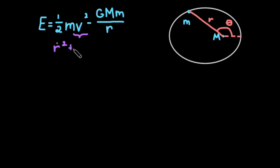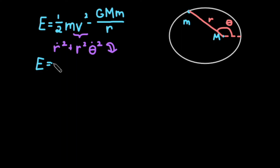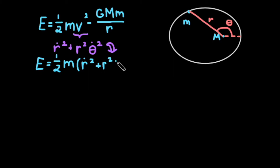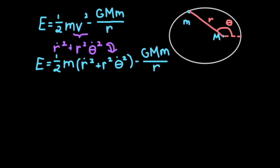We can rewrite this in terms of polar coordinates. The velocity vector is made up of the distance and angle differential components, so we can rewrite the velocity component of the kinetic energy as r-dot squared plus r squared times theta-dot squared, where theta is the angle and r is the distance between the two masses.